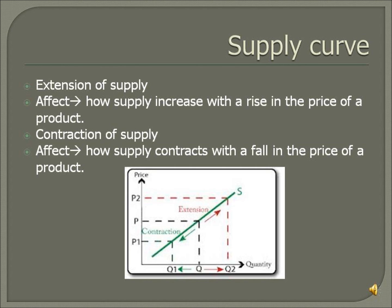Supply curve. Extension of supply — it affects how supply increases with a rise in the price of a product. Contraction of supply — it affects how supply contracts with a fall in the price of a product. These changes happen with changing price and with no change in any other factor that could affect supply.